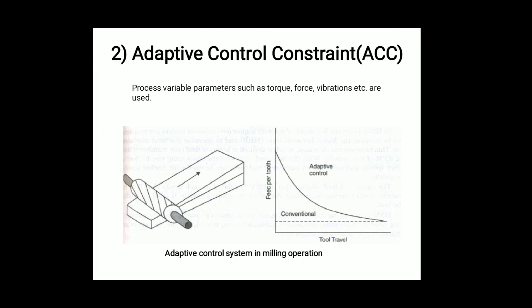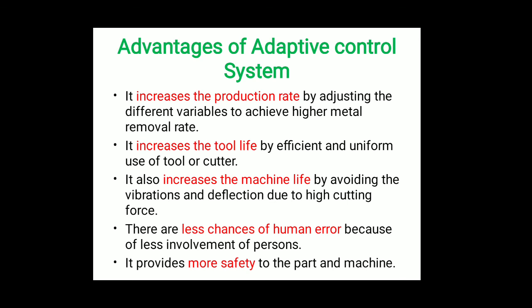The advantages of the adaptive control system: First, it increases the production rate by adjusting different variables to achieve a higher metal removal rate. Second, it increases tool life by efficient and uniform use of the tool cutter. Third, it increases machine life by avoiding vibrations and deflection due to high cutting forces. Fourth, there are fewer chances of human errors because of less involvement of persons — the automatic system uses more facilitated machines, so human error chances are less.